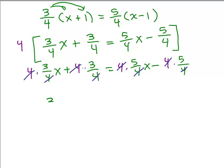The 4s cancel all over the place here. So you would end up with 3x plus 3 equals 5x minus 5. So a lot of people can go directly to this step. They could do the canceling of the 4s in their head.